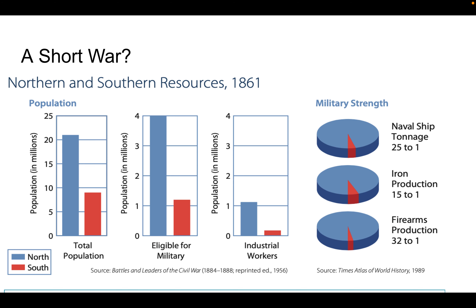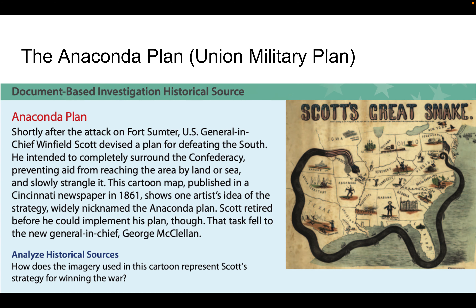Based on these charts, you might think this should have been a short war. The North had a much larger population, many more people eligible for the military, many more industrial workers to make weapons, and greater military strength. Many Northerners did think this was going to be a short conflict. The plan the Union put forward became known as the Anaconda Plan.